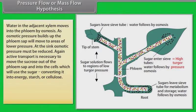Water in the adjacent xylem moves into the phloem by osmosis. An osmotic pressure builds up. The phloem sap will move to area of lower pressure. At the sink, osmotic pressure must be reduced. Again, active transport is necessary to move the sucrose out of the phloem sap and into the cells which will use the sugar, converting it into energy, starch, or cellulose.